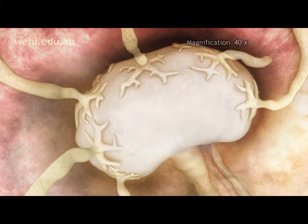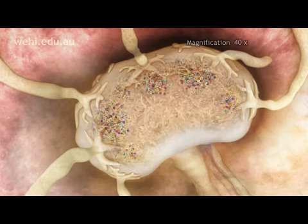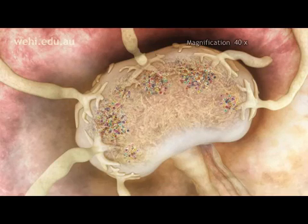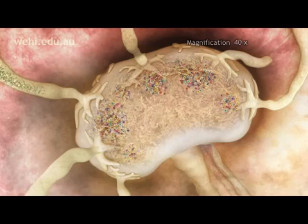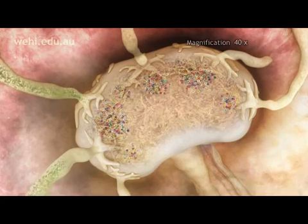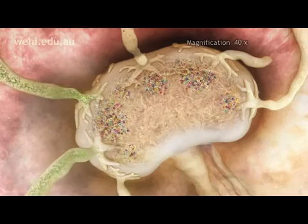The lymph node is crammed full of B cells. B cells are guardians of your immune system, scanning the body for foreign material. Arriving at the lymph node are M protein hairs from the bacteria.